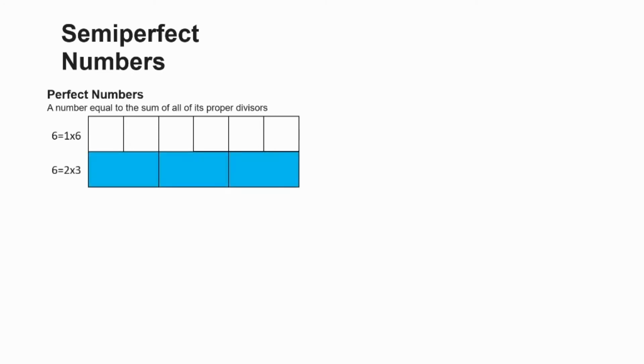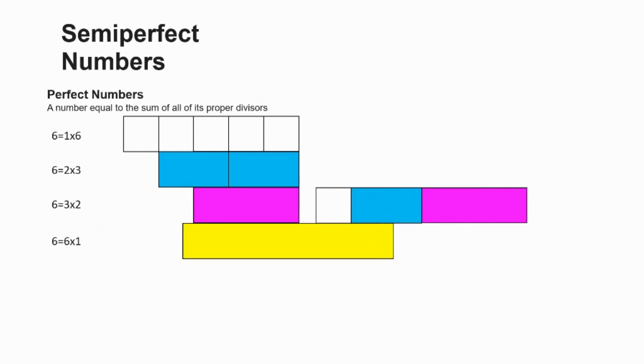100 is also what's known as a semi-perfect number. And to understand what that means, first we should look at what perfect numbers are. A perfect number is any number that is equal to the sum of all of its proper divisors. Let's look at the number 6, which is a perfect number. 6 can be divided by 1, 6 times. It can also be divided by 2, 3 times, and divided by 3, twice. And of course, it can be divided by itself once. In other words, its proper divisors are 1, 2, and 3. And if we add these all together, it's equal to the number itself. This is why we call it a perfect number.